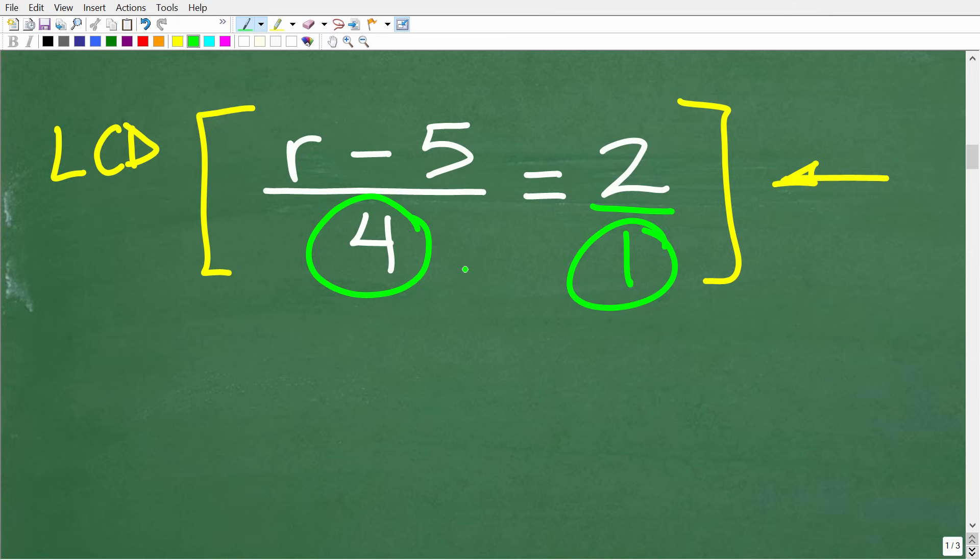Okay, so what's the LCD here? Well, hopefully you can see that it is 4. So if we multiply the equation by the LCD, what ends up happening is we clear the fractions, which makes our life a lot easier.